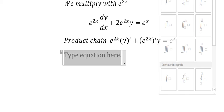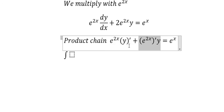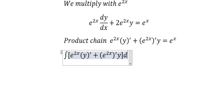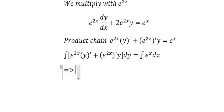We put the integral on both sides. For this term and for this term. You will get the answer: y multiplied with e^(2s) equals e^s plus C.